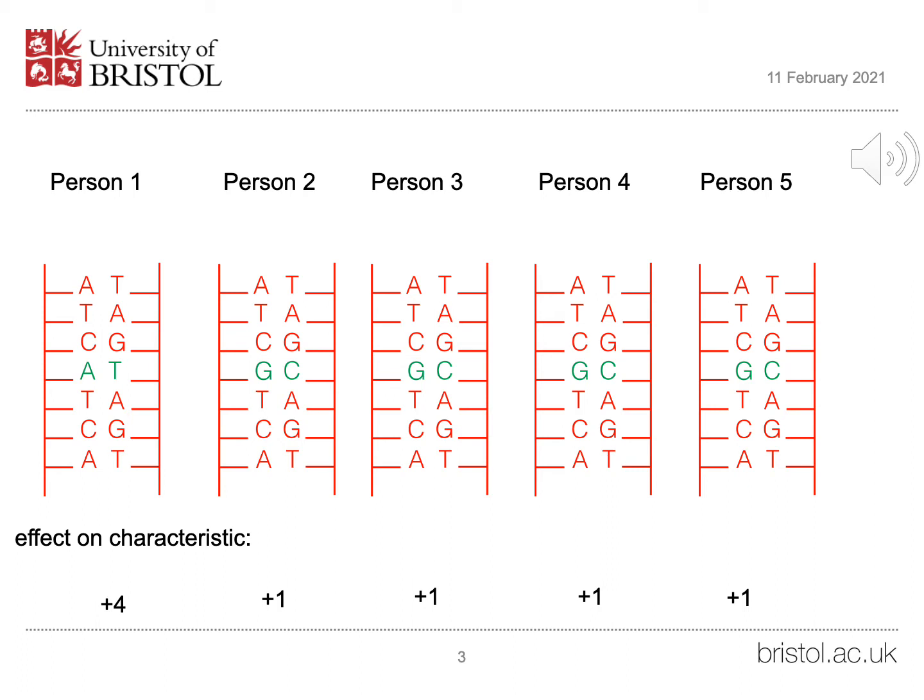The kinds of characteristics studied include height, personality characteristics, intelligence, and educational attainment.